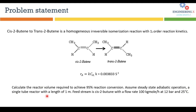A single tube reactor with a total length of one meter is used. The feed consists of pure cis-2-butene with a flow rate of 100 kg-mol per hour, entering the reactor at 12 bar pressure and 25 degrees Celsius. This is our problem statement. Let's go to Aspen HYSYS to solve this problem.